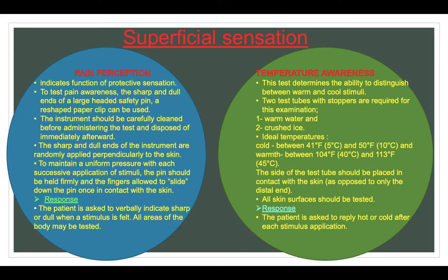Response for pain perception: the patient is asked to verbally indicate 'sharp' or 'dull' when a stimulus is felt. All areas of the body may be tested. For temperature awareness, which determines the ability to distinguish between warm and cool stimuli, two test tubes with stoppers are required — one with warm water and one with crushed ice. Ideal temperatures are 41–50°F for cold and 104–113°F for warmth. The side of the test tube should be placed in contact with the skin, and all skin surfaces should be tested.